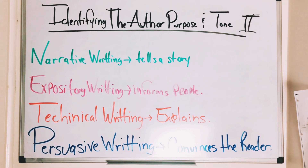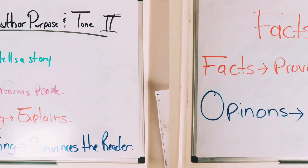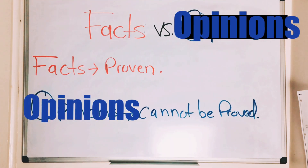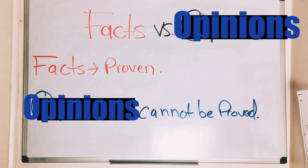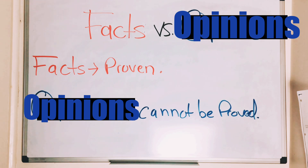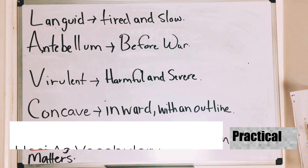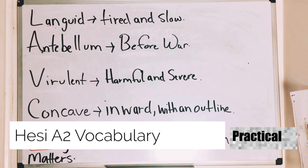Facts versus opinions: facts are statements that are proven — whether right or wrong, they are proven. Opinions are subjective and cannot be proved — they can be anything. Alright guys, so now I'm going to focus on the vocabulary section.